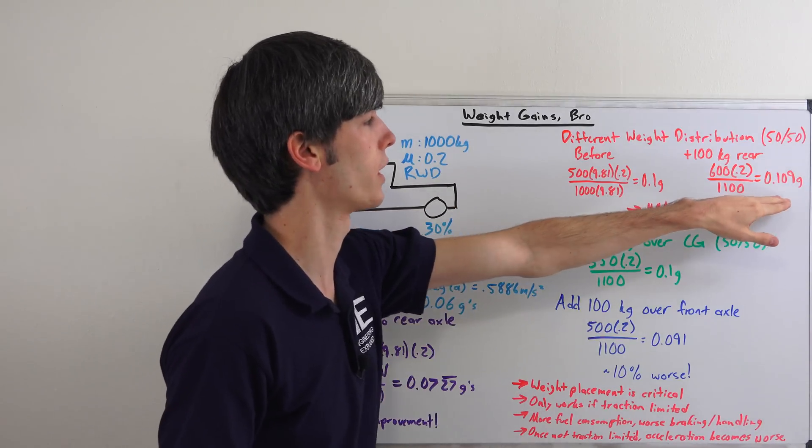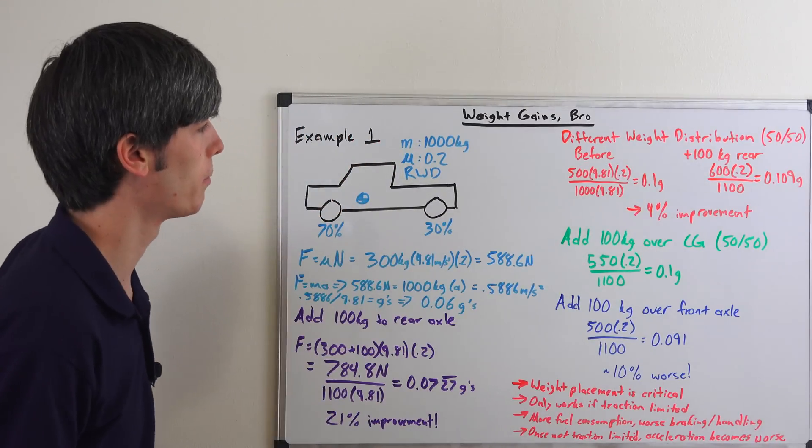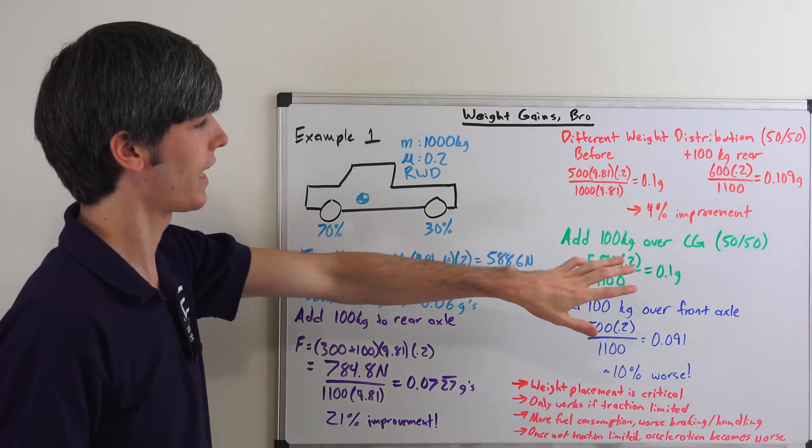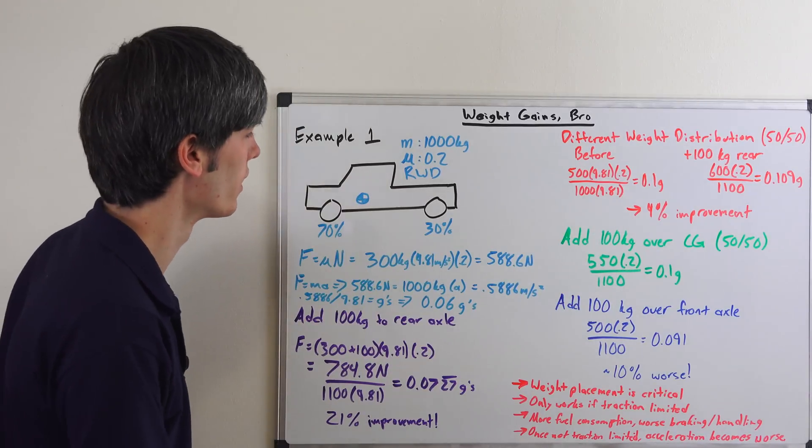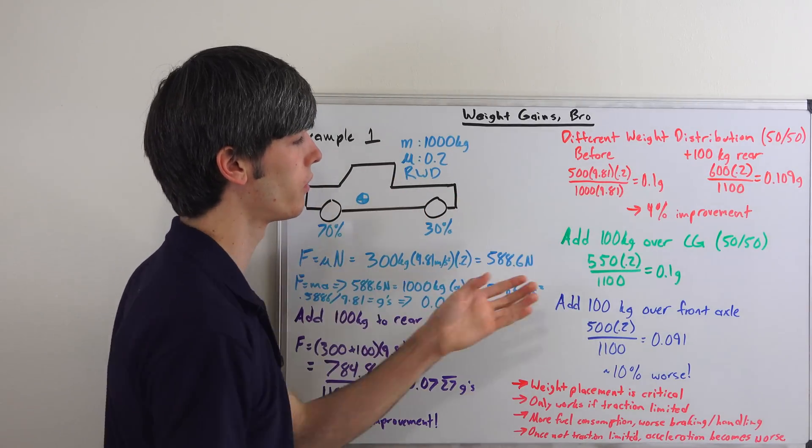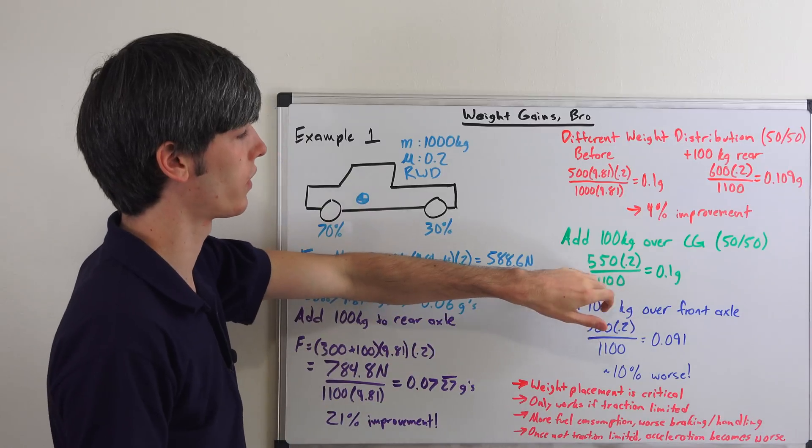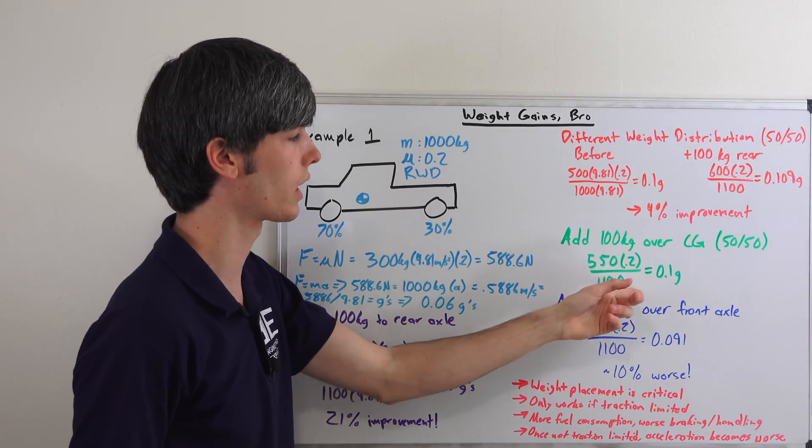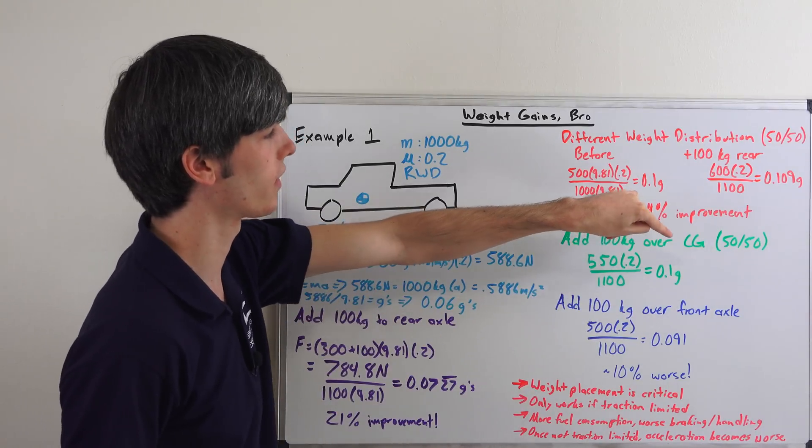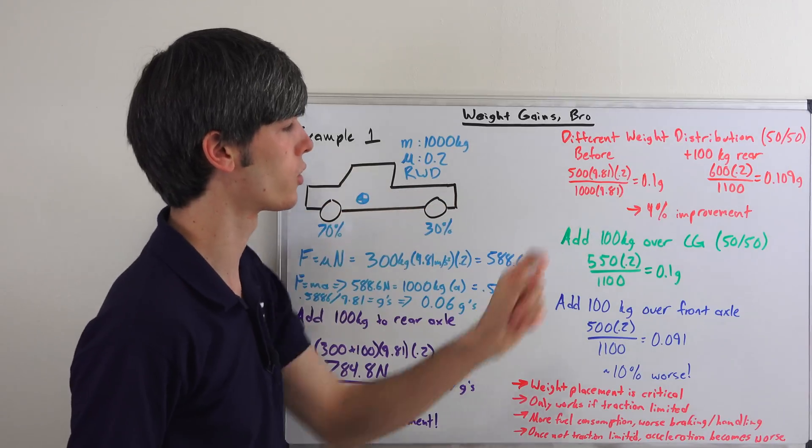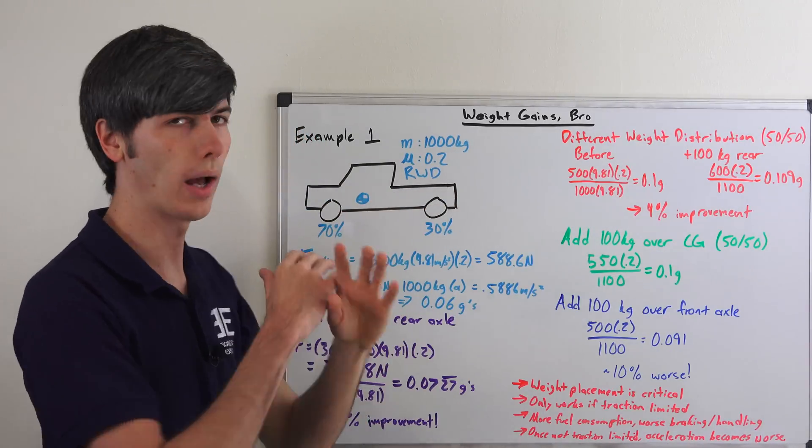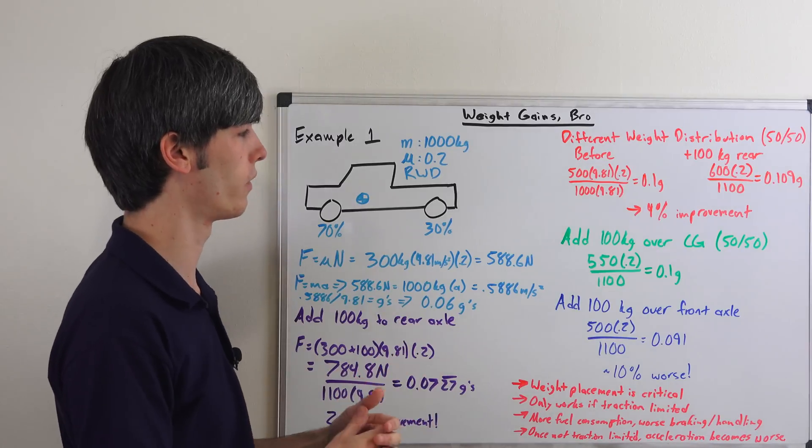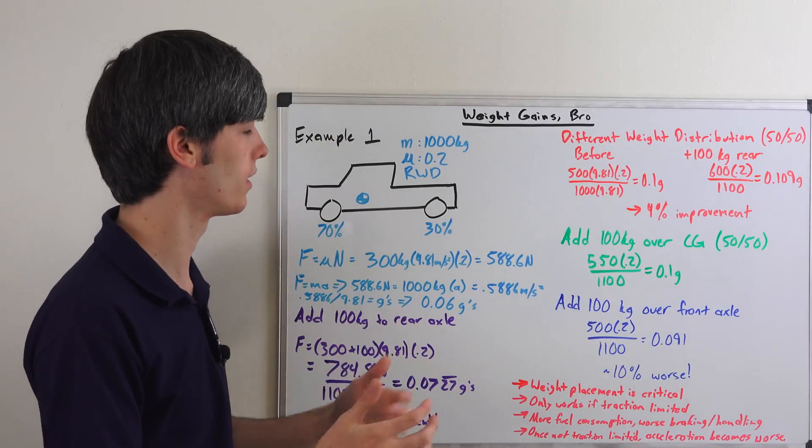Still helps in this situation, 0.109 g is better than 0.1, but you know there's other sacrifices you're making by adding weight. So let's say you add 100 kilograms over the center of gravity. So you add, and we're going to use the same scenario where we have a 50-50 weight distribution. So you add 100 kilograms over the center, 550 would be half of 1100 times 0.2 divided by the mass of the vehicle 1100, 0.1 g. As you notice that's the exact same as before we've added weight. So by adding weight over the center of gravity you do absolutely nothing and in fact you only make things worse because there are negative things that come with adding weight to a vehicle: handling, fuel economy, deceleration, things like that.